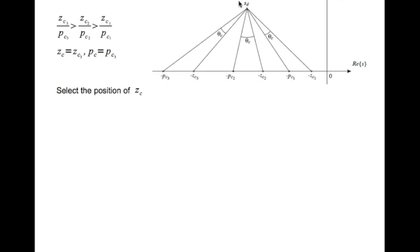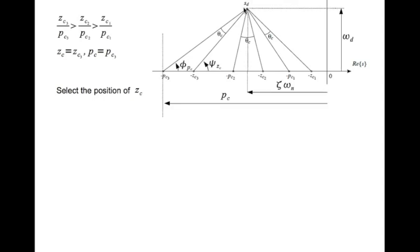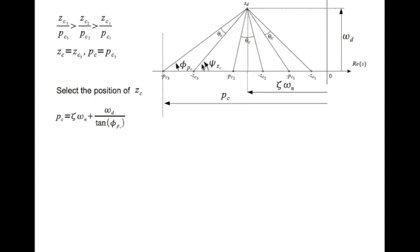We mark the parameters: zeta·omega_n is the real part of the desired closed-loop pole, omega_d is the imaginary part. phi_zc is the angle the vector (sd - zc) makes with the positive real axis, phi_pc is the angle (sd - pc) makes with the positive real axis. The location of the controller pole pc can be expressed as: pc = zeta·omega_n + omega_d / tan(phi_pc).